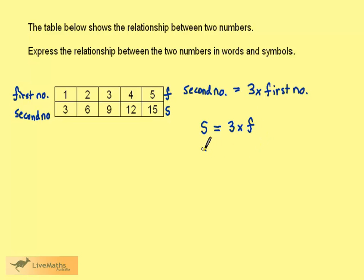When working with algebra we don't normally write the multiplication symbol between two things multiplied together. So we write the formula as S equals 3F. Remember 3F means 3 times F. The multiplication sign is left out by convention.